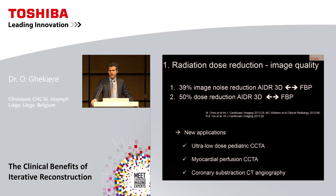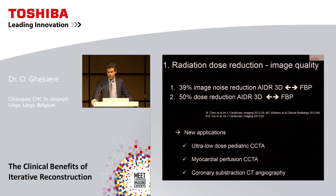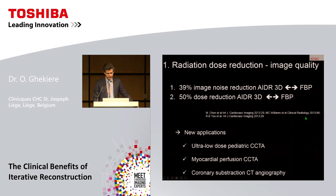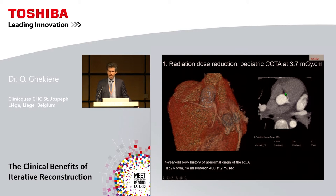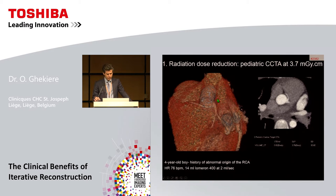This has led to new applications such as ultra-low dose pediatric cardiac CT, myocardial perfusion CT at 100 kV with better contrast, and coronary subtraction cardiac CT. Here you see a clinical example of a pediatric cardiac CT with a dose length product of 3.7 mGy·cm — a four-year-old boy with an abnormal origin of the right coronary artery from the left sinus of Valsalva, with a high inter-arterial course, as seen on the MIP and posterior 3D view.